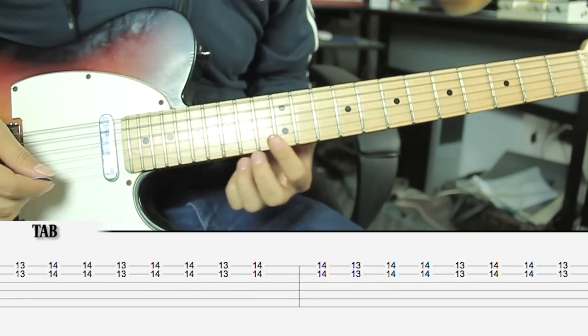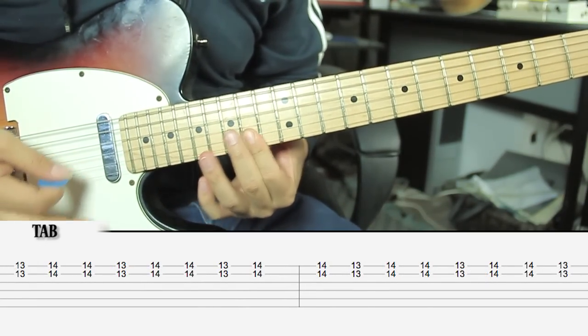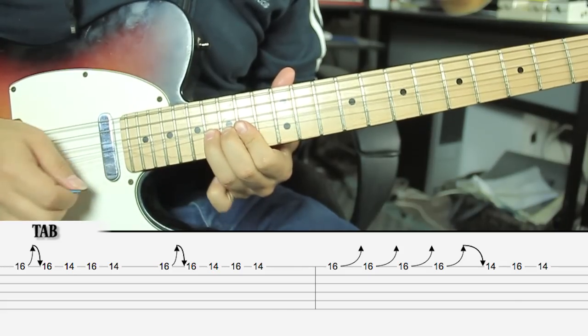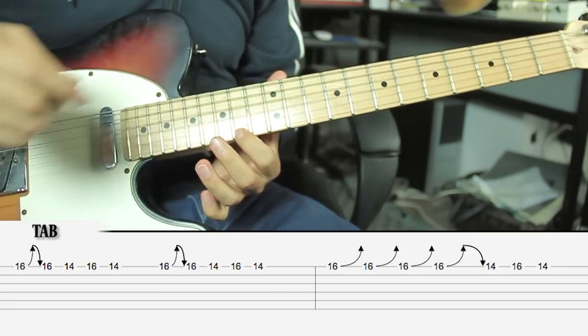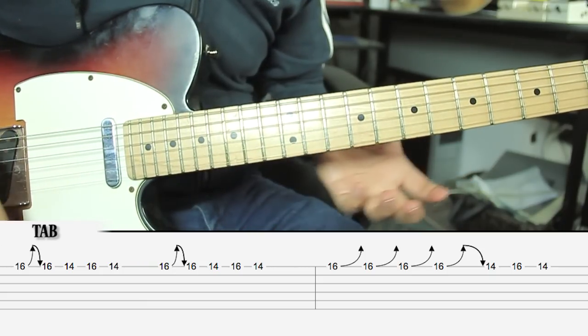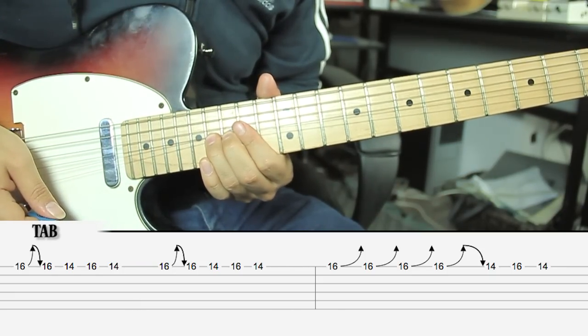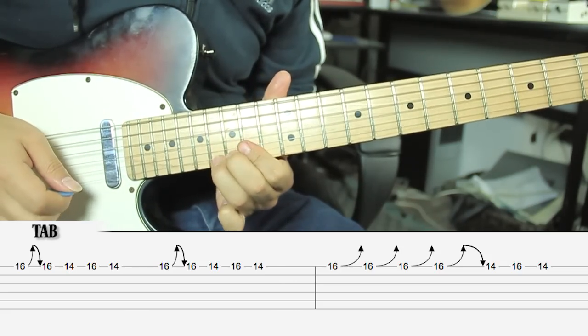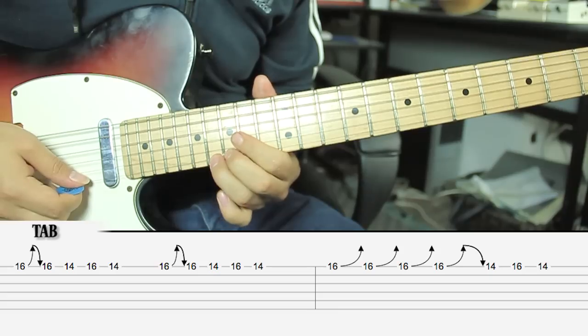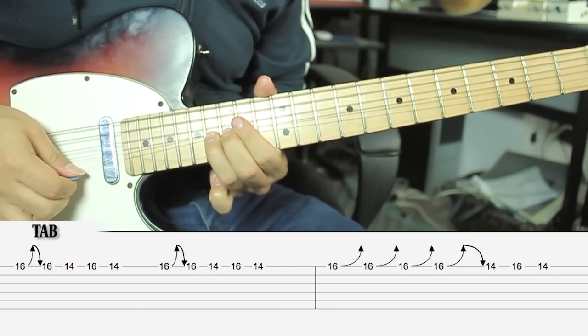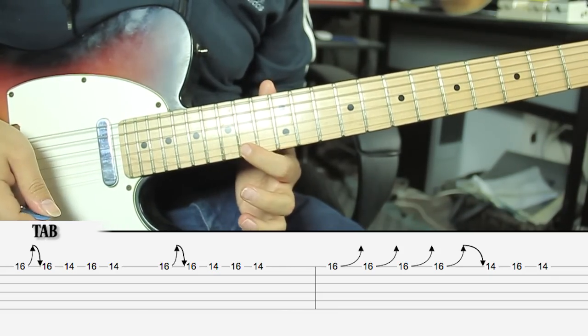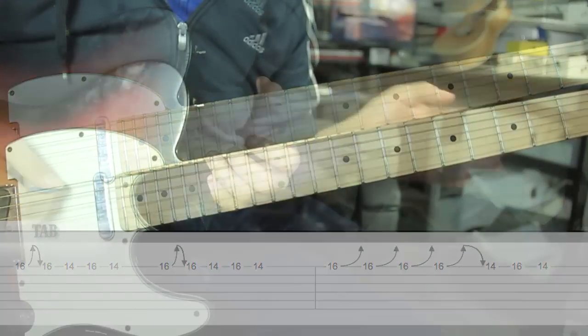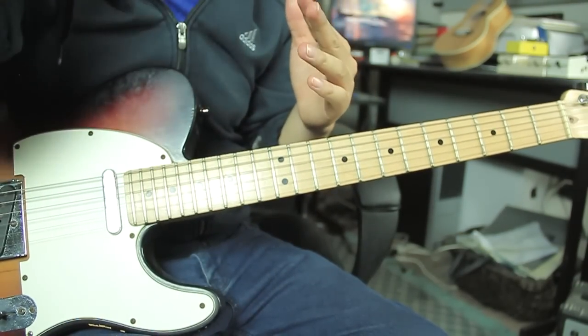Next phrase starts the same way, and here we do this, but we finish differently. We just repeat the same lick, this, we repeat it twice. And the third time we stay up and finish with a hammer-on and pull-off of the same notes - F# G#.